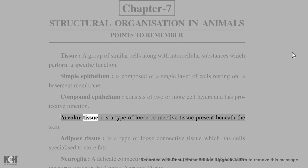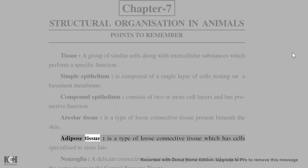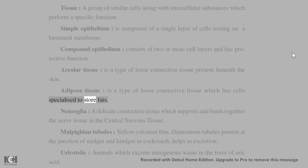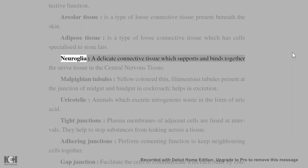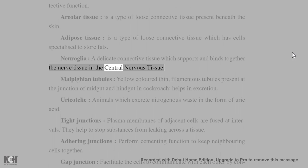Areolar tissue is a type of loose connective tissue present beneath the skin. Adipose tissue is a type of loose connective tissue which has cells specialized to store fats. Neuroglia is a delicate connective tissue which supports and binds together the nerve tissue in the central nervous system.